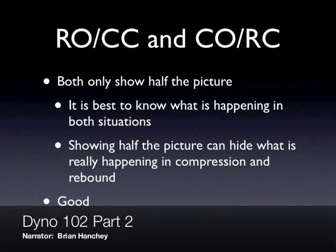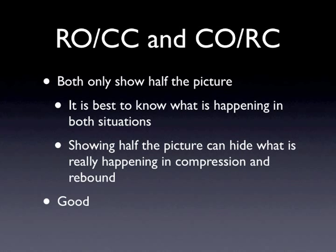So again, rebound, open, compression, close, and compression, open, rebound, close really only tell you half of the picture. There are two of the four quadrants on each one of those charts, so we really don't know what's going on with the other half of the quadrant or of the cycle of the dyno plot. And obviously it's a great way, if you want to hide what's going on or if something strange is going on in the shock, you would show this plot to a customer so that they don't see the things that you're trying to hide.